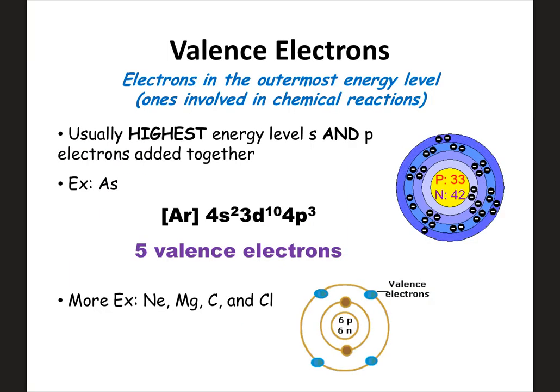Another concept we need to talk about are valence electrons. Valence electrons are the electrons in the outermost energy level — the furthest from the nucleus. They're the most important electrons because they're the ones involved in chemical reactions. Typically, valence electrons are the highest S and P electrons added together. So the highest energy level S and P electrons totaled give you your valence electrons.